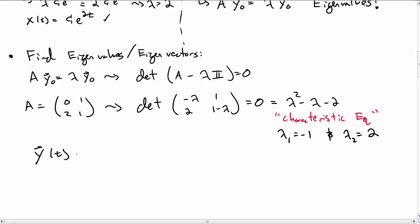So if we recall, our guess was that y goes like some vector times e to the lambda t. So it looks like our solution is y1 e to the minus t plus y2 e to the 2t. Are y1 and y2, those vectors, arbitrary vectors?